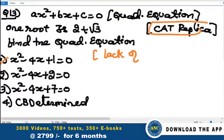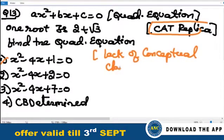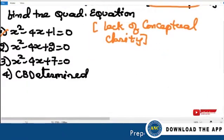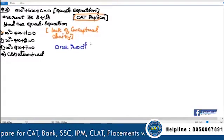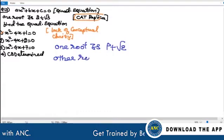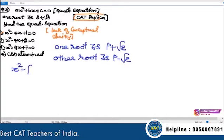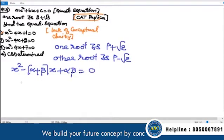This is because of lack of conceptual clarity. Students just memorize concepts — they love to memorize and lack conceptual clarity. What they will do is, if one root is p + √q, they directly write the other root as p - √q. They got bad teachers in school. Then they use the equation x² - (α + β)x + αβ = 0.